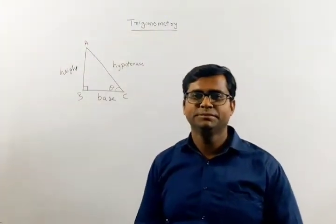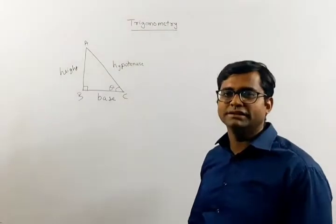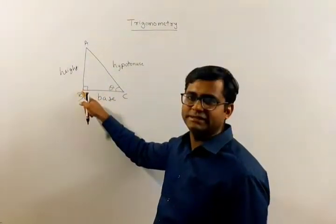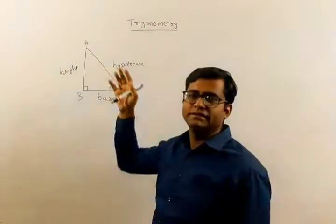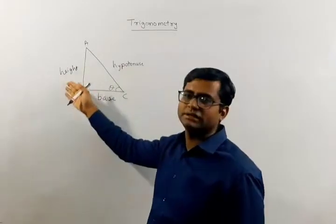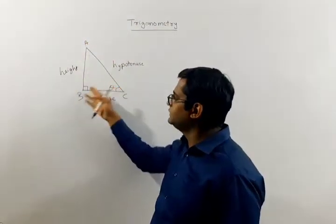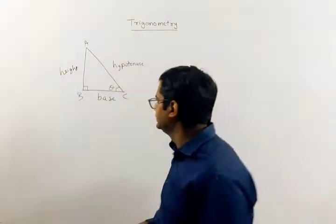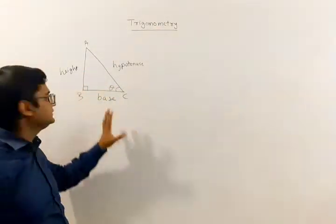Today's topic of discussion is trigonometry, which is the study of right angle triangles. Here we have a right angle triangle where this angle is a 90 degree angle. This particular side is called the height, this side is called the base, and the side opposite to the right angle or 90 degrees is called the hypotenuse.